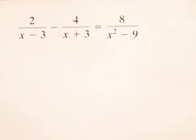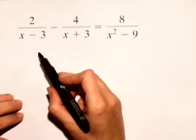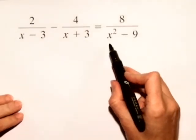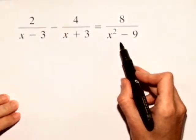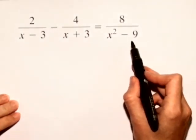For our next problem, we'll solve a rational equation. Notice in this equation, on the right hand side in the denominator, we have x squared minus 9, which is the difference of two perfect squares. So we're going to factor that when we start.